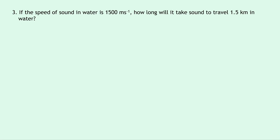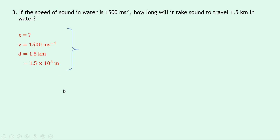Question three says that if the speed of sound in water is 1500 meters per second, how long will it take sound to travel 1.5 kilometers in water? We're trying to find the time. Speed is 1500 meters per second and distance is 1.5 kilometers. We've got a prefix here — kilo — so we need to convert that into meters: 1.5 times 10 to the 3 meters. Our equation is d = vt, rearranging for time by dividing both sides by v gives t = d/v. Substituting in: 1.5 × 10³ divided by 1500 gives 1 second — because 1.5 × 10³ is the same as 1500.